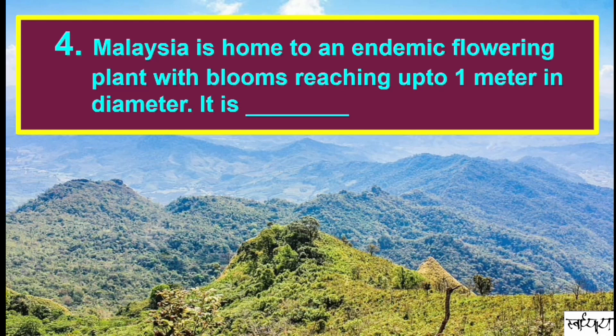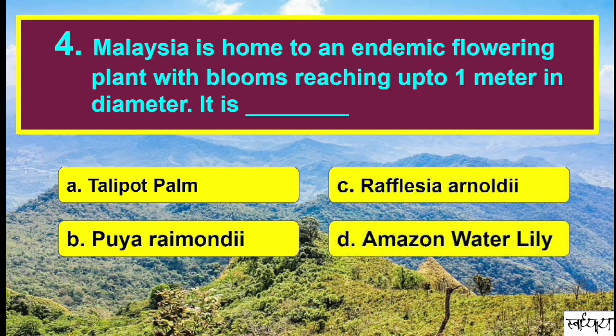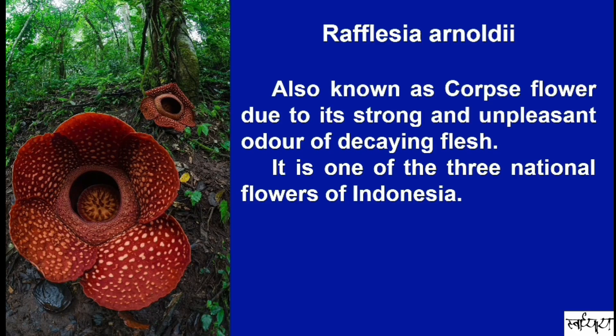Malaysia is home to an endemic flowering plant with blooms reaching up to 1 meter in diameter. The answer is Rafflesia Arnoldi. It is also known as corpse flower due to its strong and unpleasant odor of decaying flesh. It is one of the three national flowers of Indonesia.